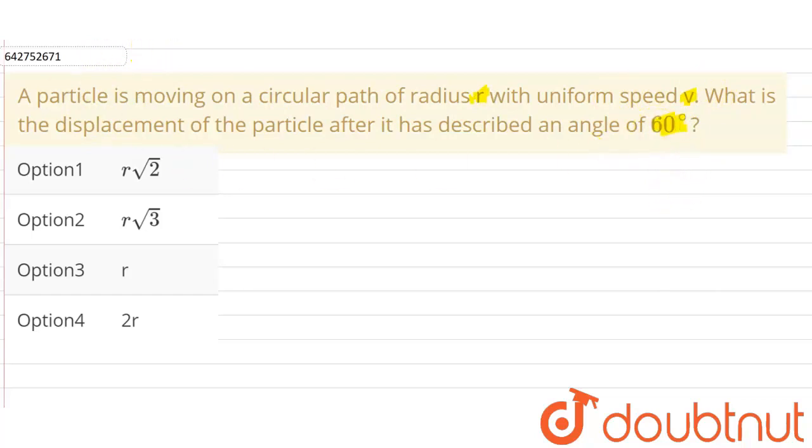Our given options are r root 2, r root 3, r, and 2r.